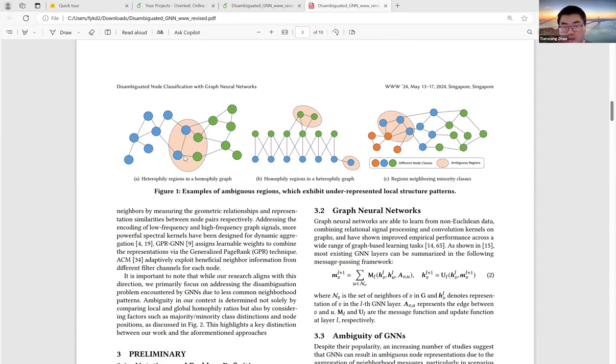Like regions that are minority and underrepresented, like heterophilous regions in a homophilic graph, or homophilous regions in a heterophilic graph.